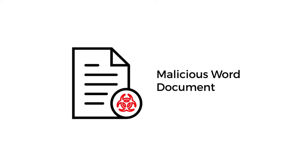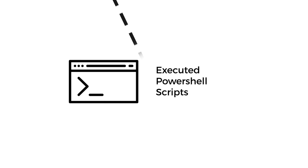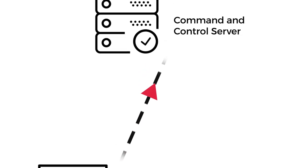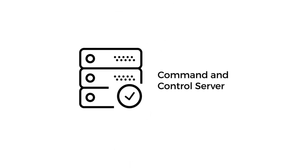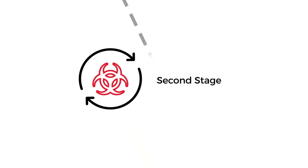The Word document in this case executed additional scripts — PowerShell scripts — that reached out to a command and control server outside and grabbed a second stage loader to execute malicious code on the machine and take control of it.